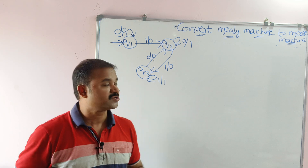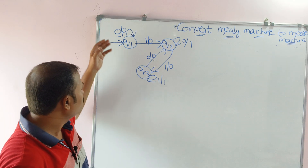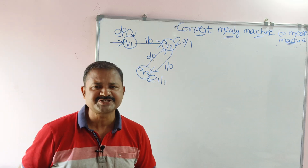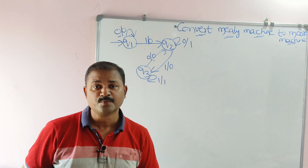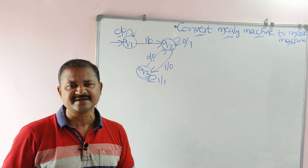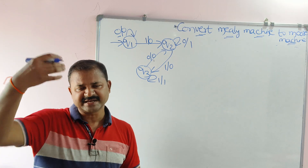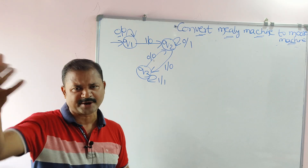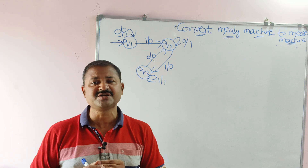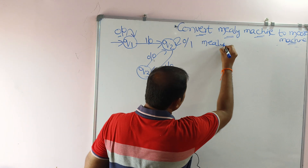Now let us discuss converting a Mealy machine to a Moore machine. A Mealy machine is given, and for this Mealy machine we have to construct the equivalent Moore machine. In the examination, a Mealy machine transition diagram or transition table may be given, and for the corresponding transition diagram or table we have to construct the Moore machine transition diagram or transition table. So first let us construct the Mealy machine transition table.